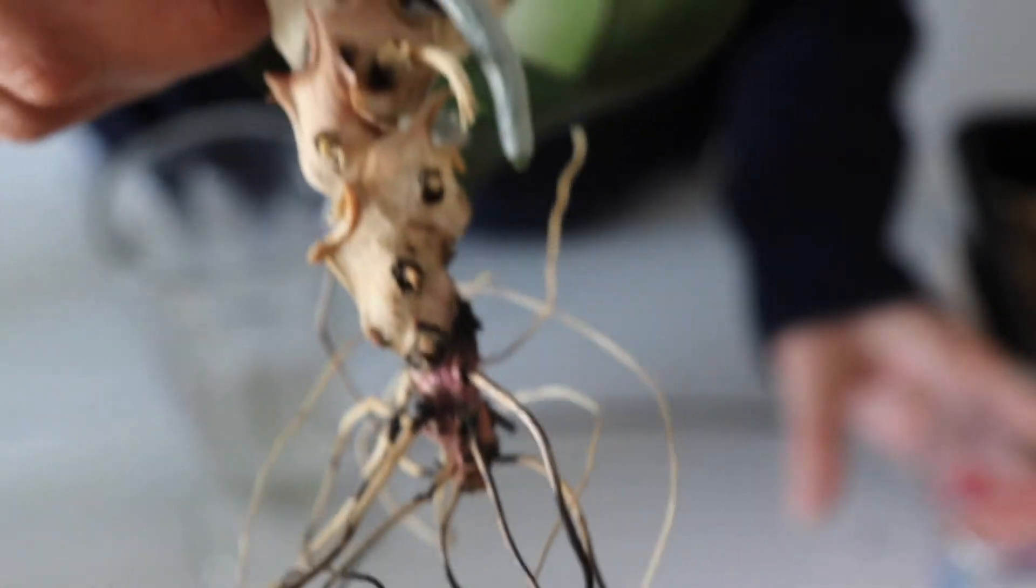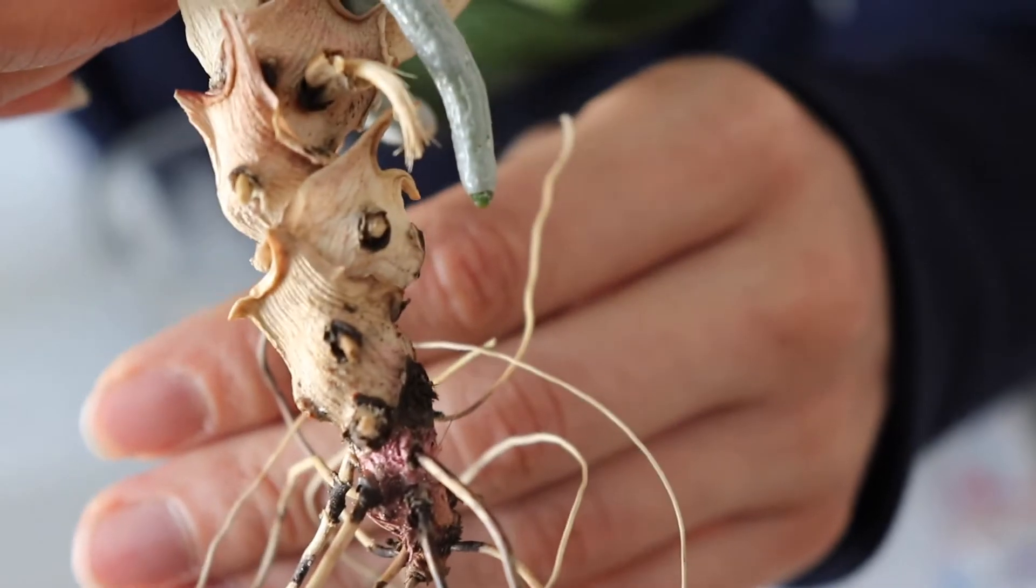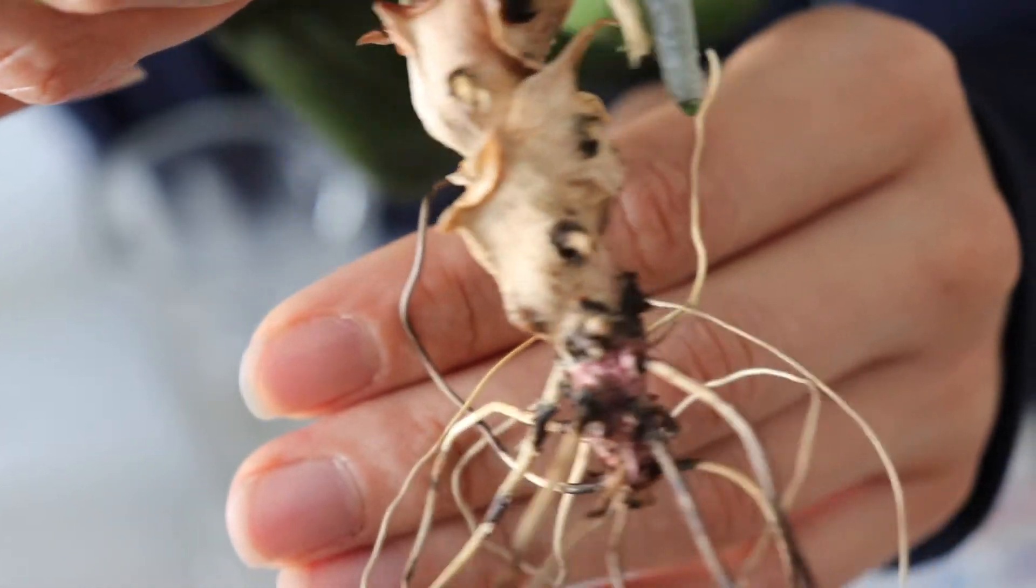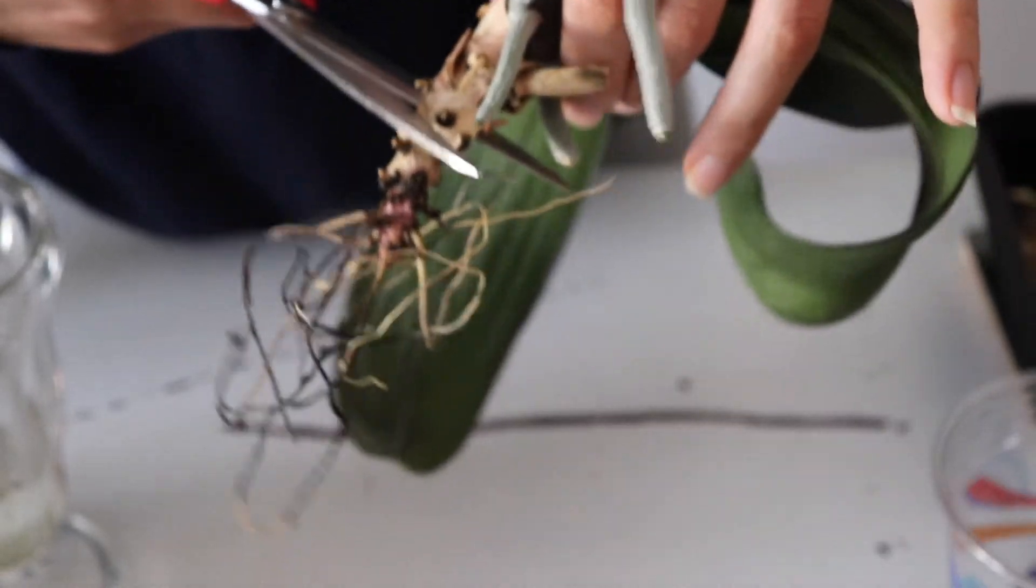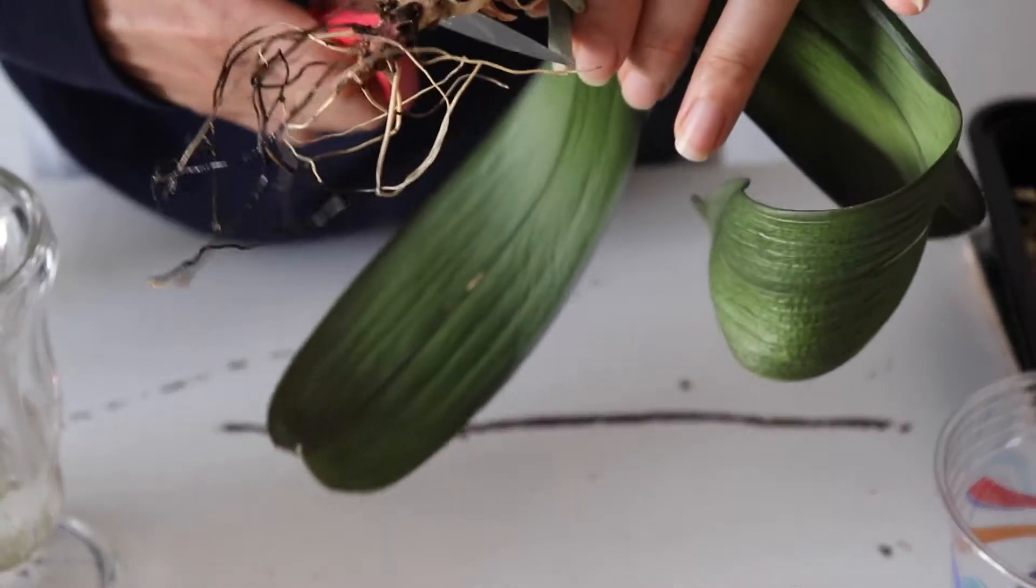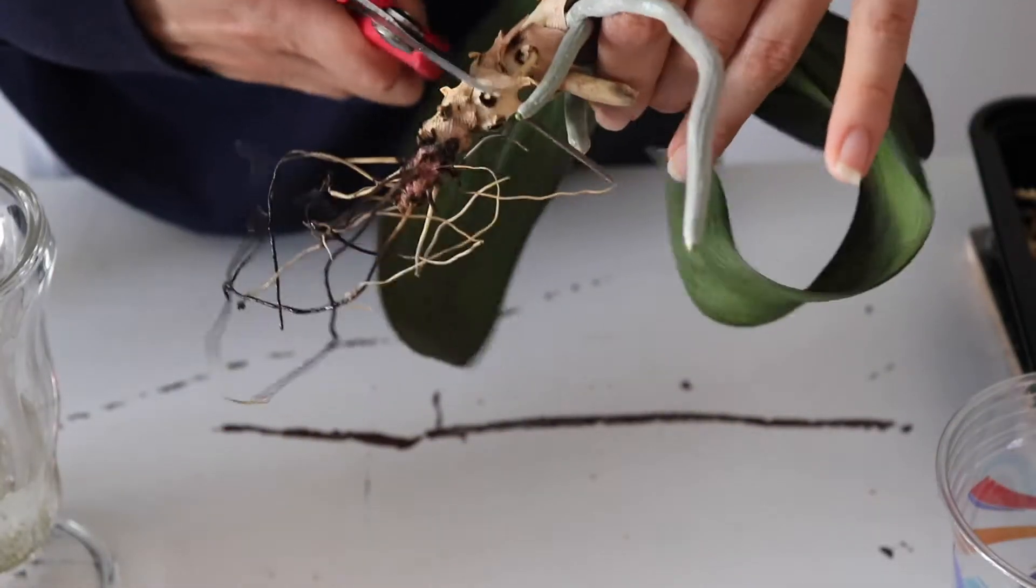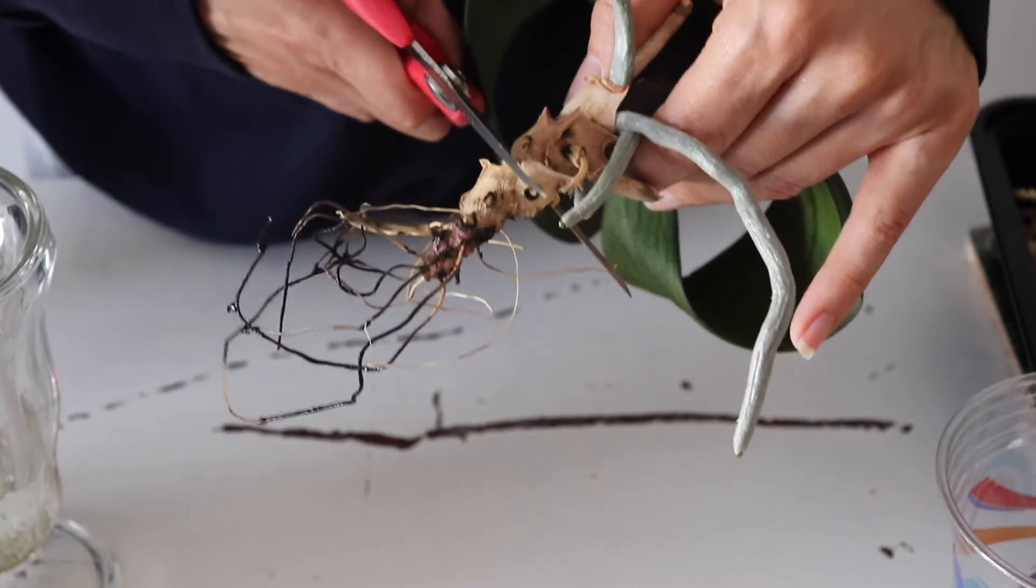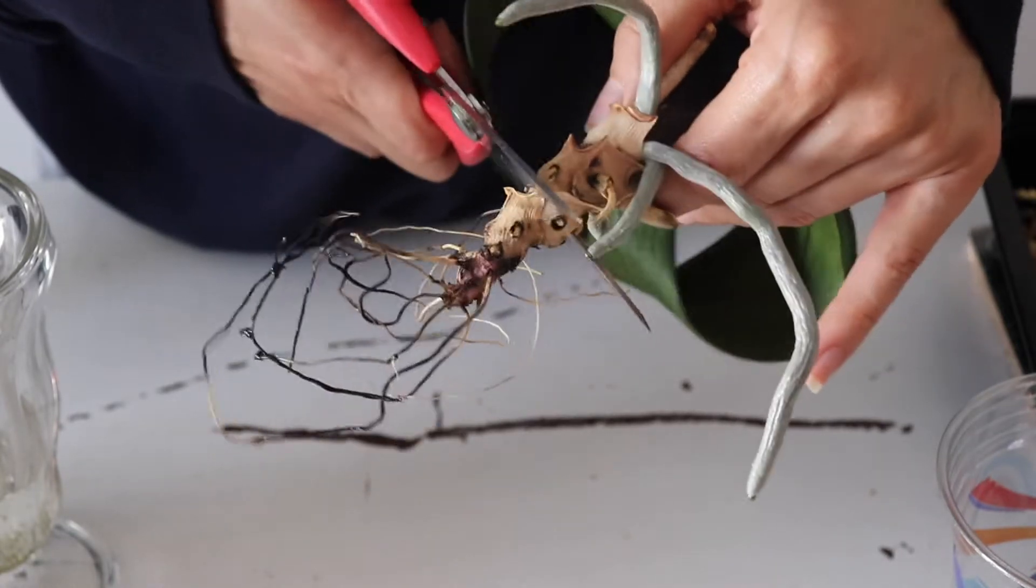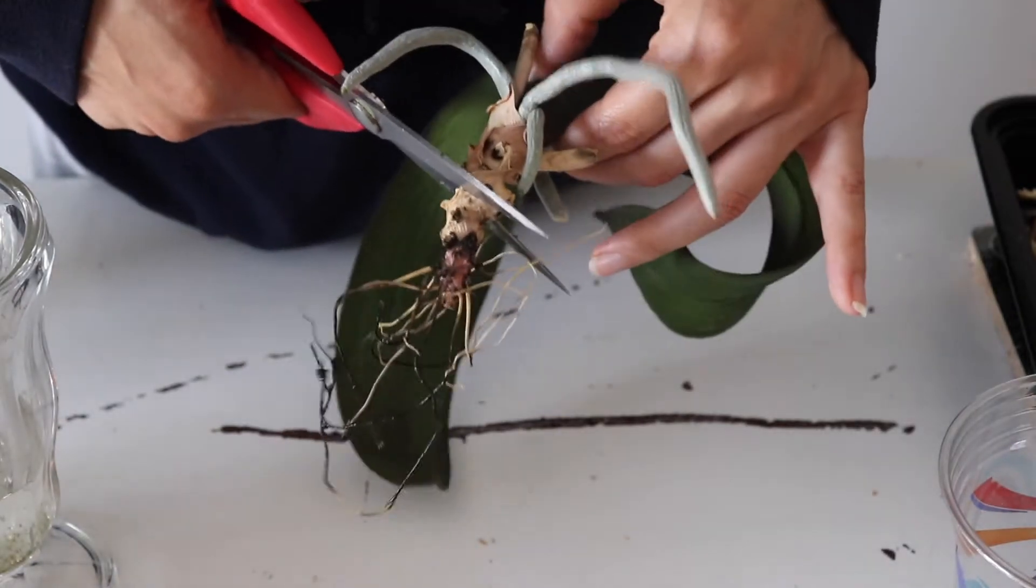It's at a point where the stem and the stringy root both are dead. This is just a breeding ground for bacteria or mold to build up, and generally it's pretty ugly and we don't want our orchids looking ugly.